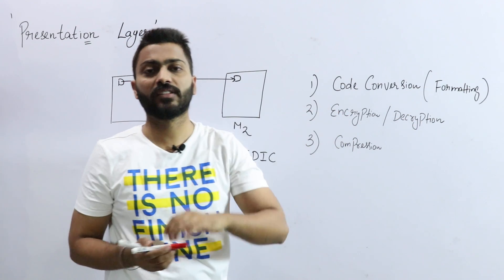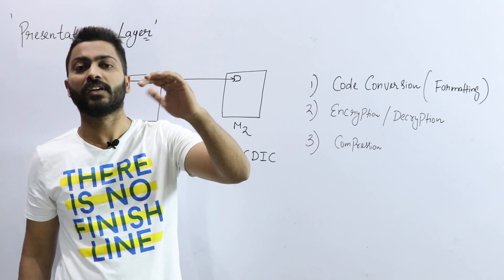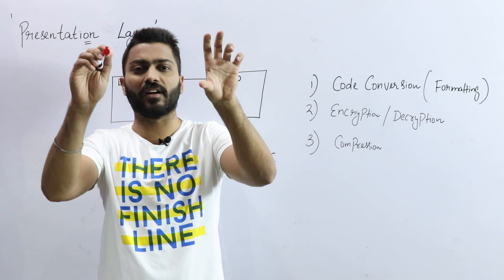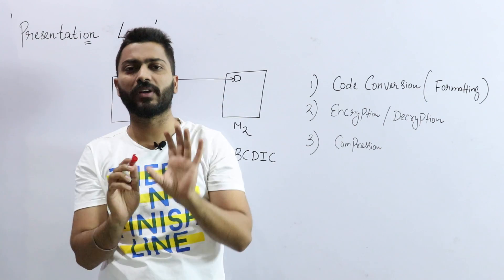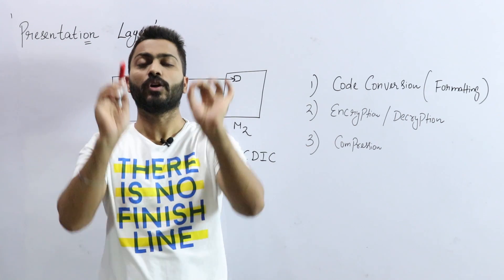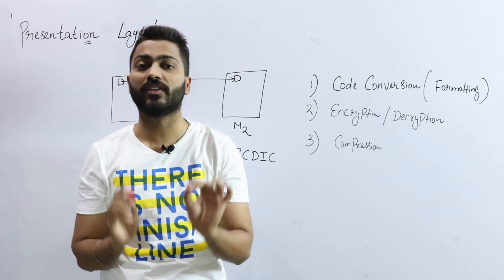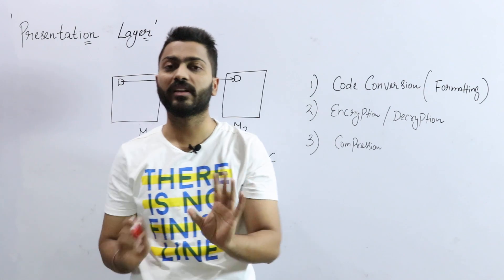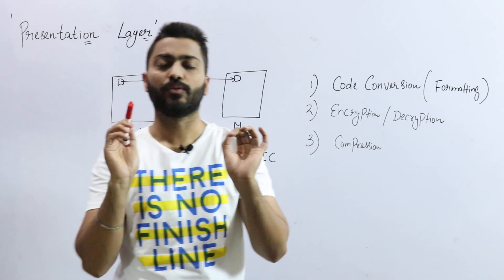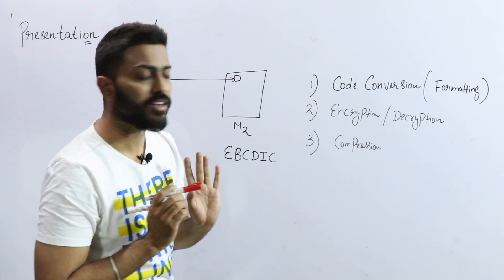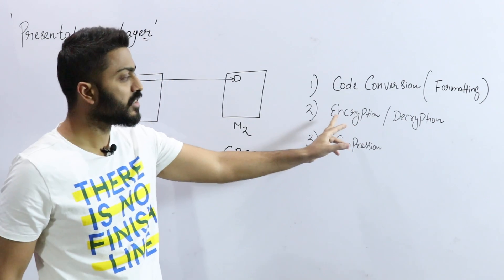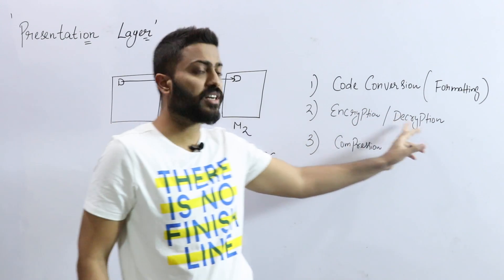The application layer can get the help of the Presentation layer to convert data into the required format, so that the user can get the data properly visible and properly readable. The second responsibility is Encryption and Decryption.